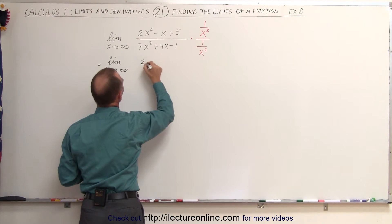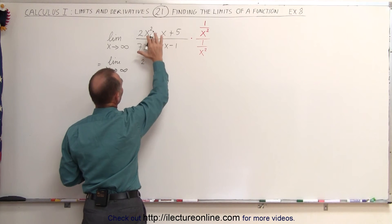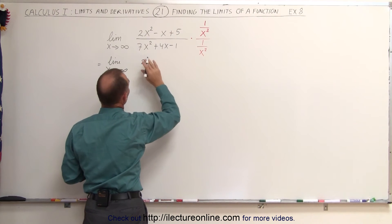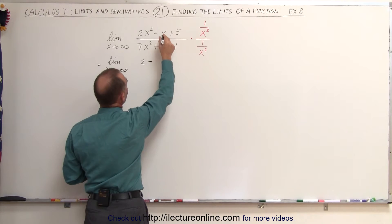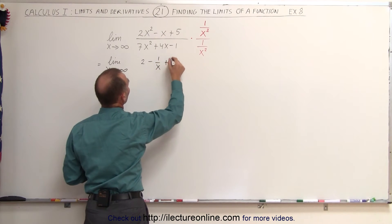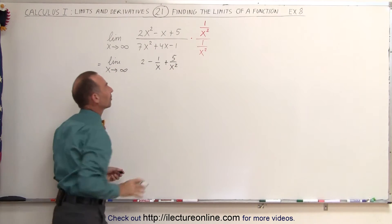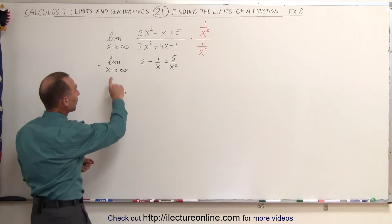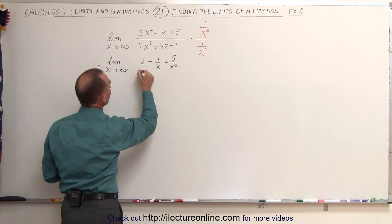And when we multiply this through, we get 2 divided by, well actually, x squared divided by x squared is 1. So that's 2 minus x divided by x squared is 1 over x, and plus 5 divided by x squared is 5 over x squared. So the numerator then simplifies to that. And now you can see how we can plug in the limit in the numerator.